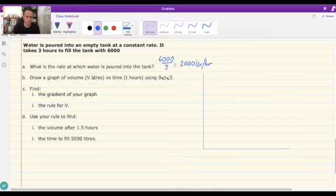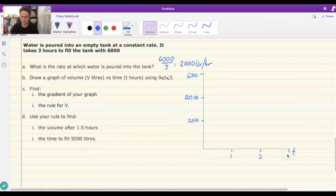Draw a graph of volume, V litres, versus time using the constraints of 0 to 3, so time is between 0 and 3 hours. I've got a set of axes here. Time is almost always on the x-axis. So T is going to be down there, V is up there. Let's put some marks in there. That's going to be 3 hours, so 3, 2, and 1. This is going to be 6,000. Then let's go 2,000 and 1,000. That should be 4,000, not 2,000. 4,000, 2,000, and 1, 2, 3 hours.